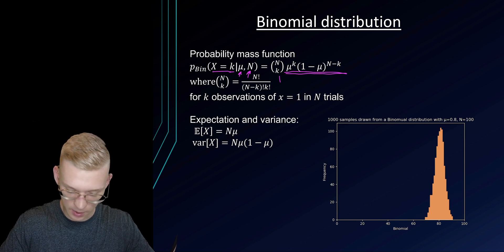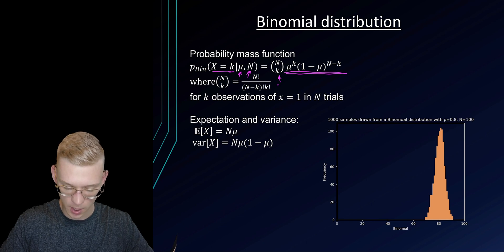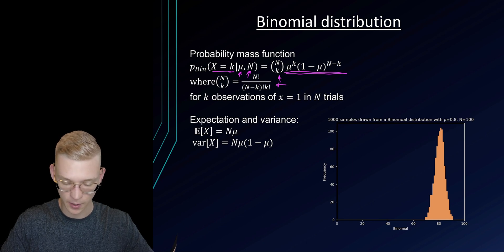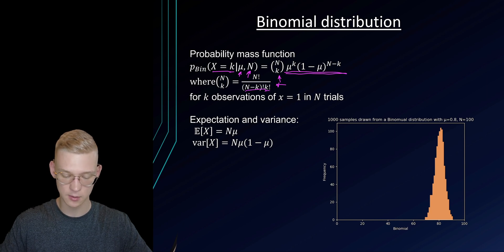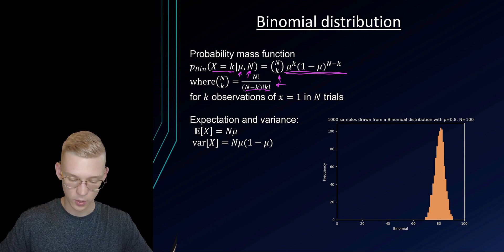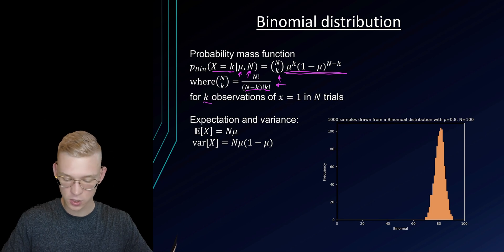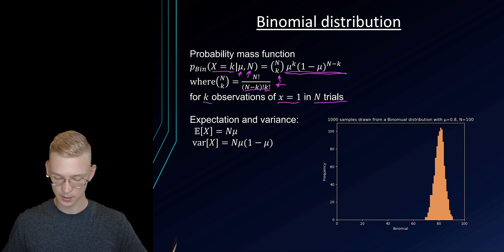And this will get us n over k, where n over k is n factorial divided by n minus k factorial times k factorial, so this is the very important term, where we have k observations for x equals 1 in n trials.